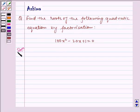Now let us write the solution. Given equation is 100x² - 20x + 1 = 0.